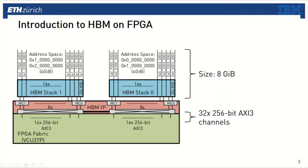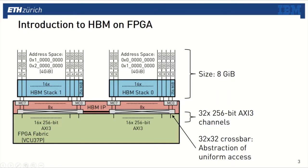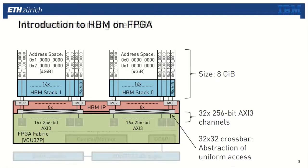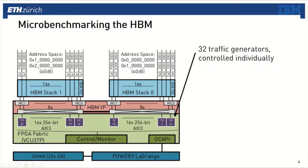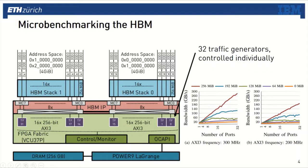One important functionality that the HBM controller implements is a 32 by 32 crossbar. With this, the entire HBM address space is accessible from all 32 AXI3 channels exposed to the FPGA fabric, giving the abstraction of a uniform memory that is 8 GB. To understand the performance characteristics of the HBM, we designed a simple microbenchmark. We attached 32 traffic generators to each AXI3 port, and these traffic generators can be controlled individually.